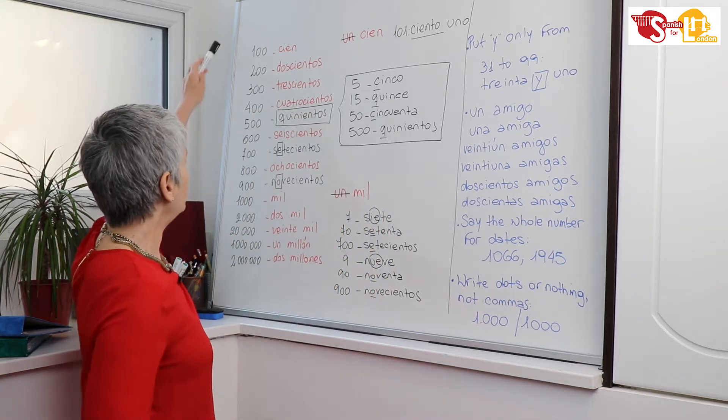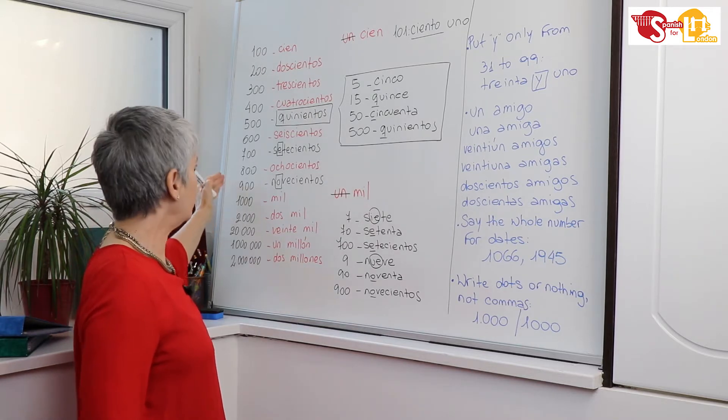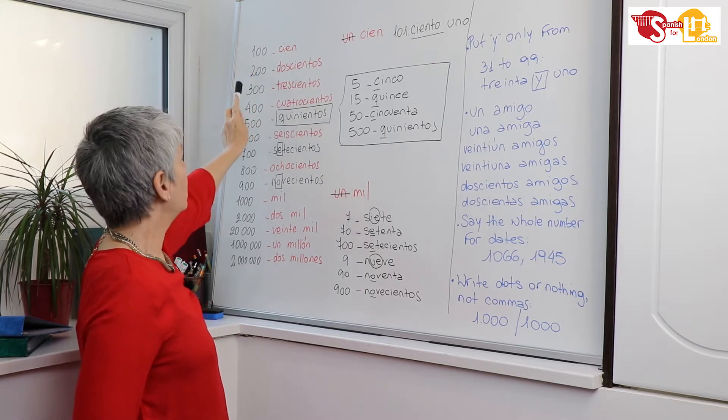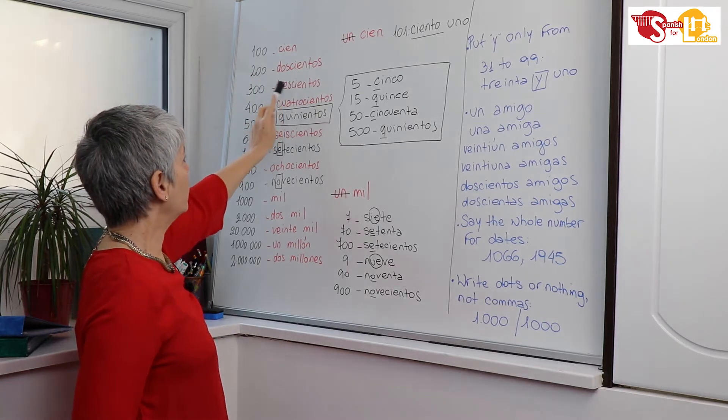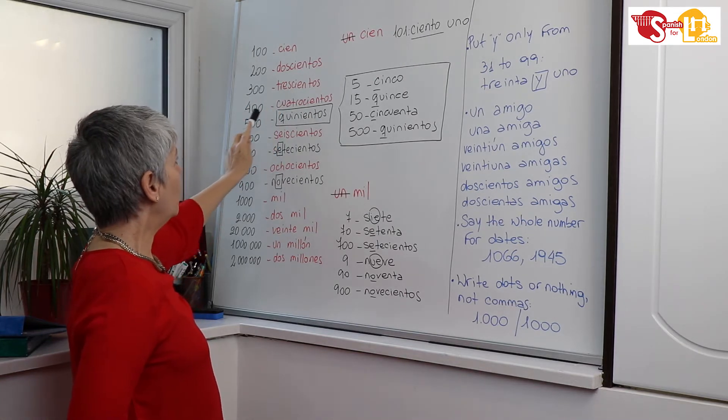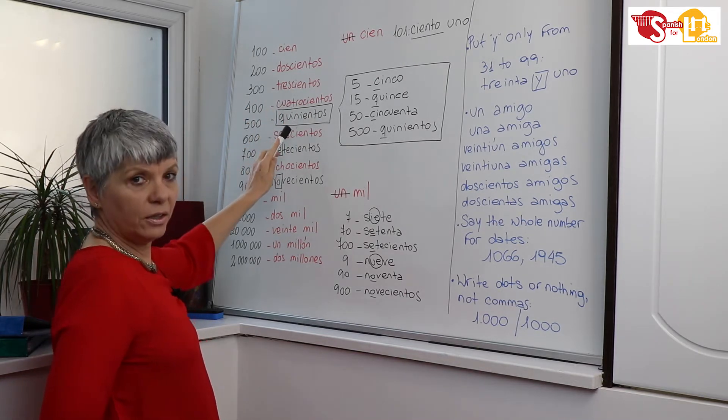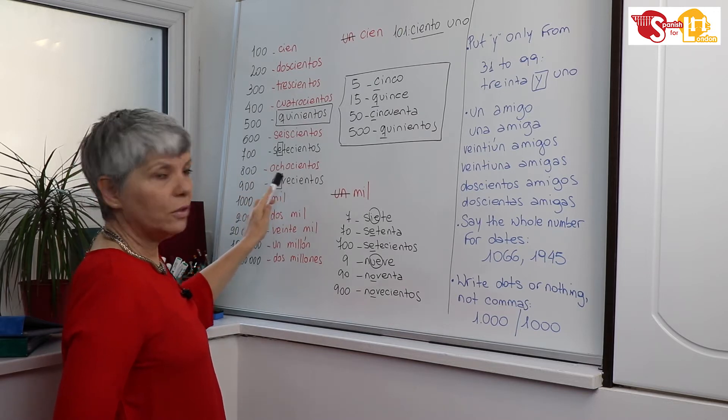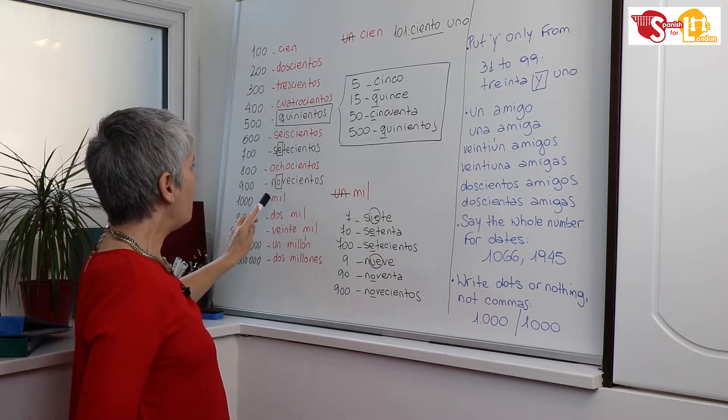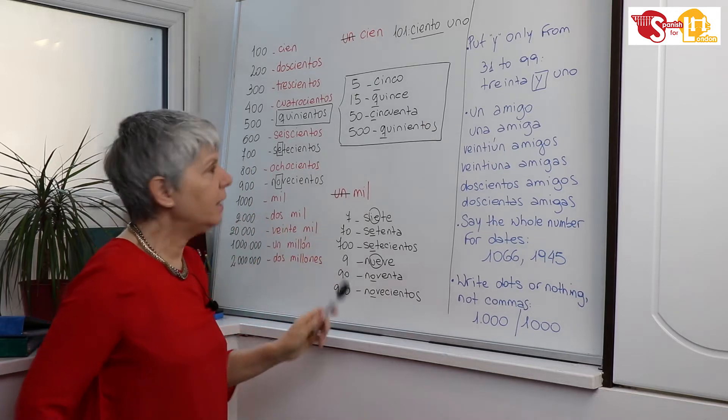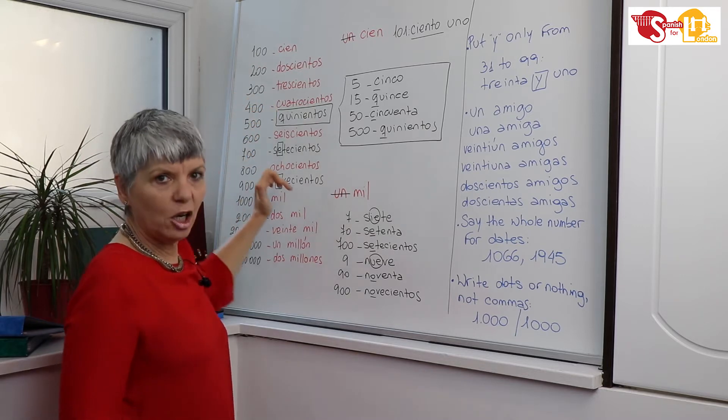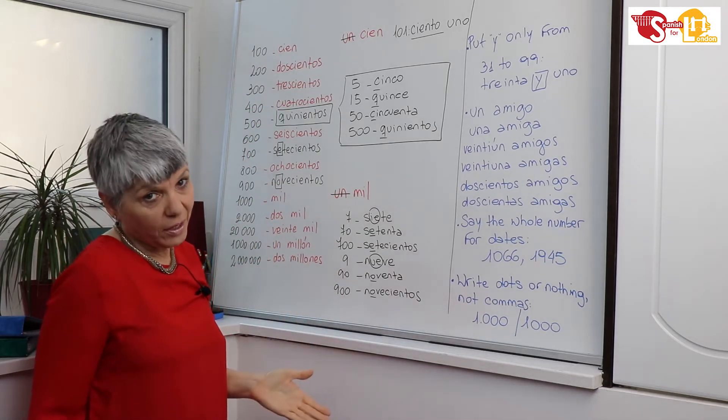I wrote here numbers from 100 to 1000. First, focus on this. Let's see the names: 100, 200, 300, 400, 500, 600, 700, 800, 900, 1000. Okay, I wrote the regular ones in red and the irregular ones in black. Let's see first the regular ones.